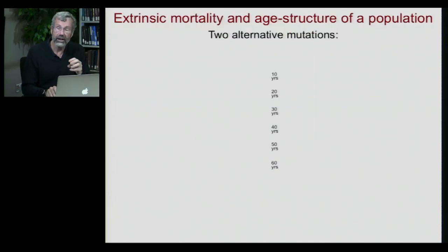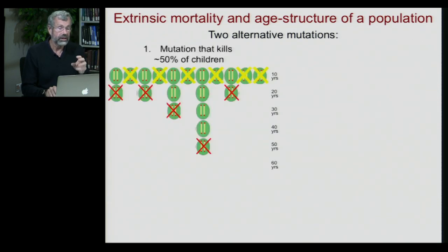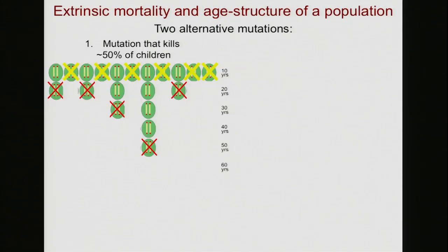Here we're going to have our age structure again, and let's look at two alternative mutations. On the left, we have a rare mutation that kills 50% of children. On the right, we have a mutation that doesn't do anything to young people — it's harmless — but it's inevitably fatal to old people.